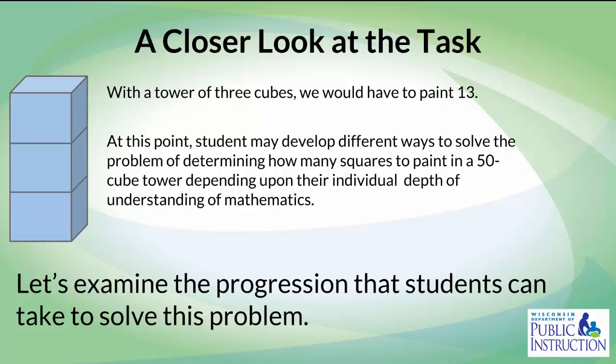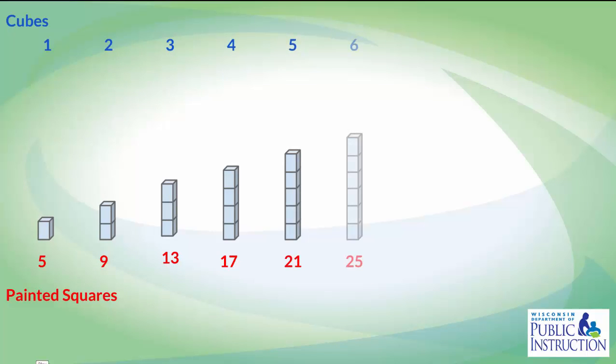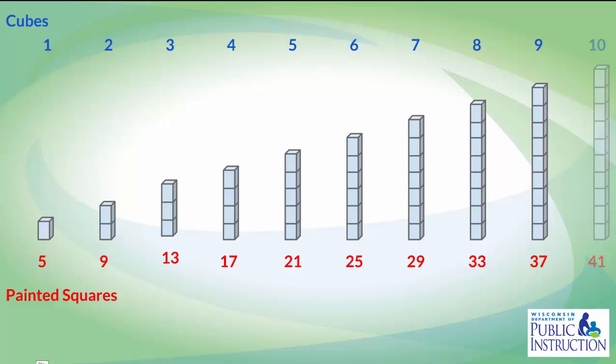Let's look further at this progression to see how students could solve this problem. One way you may have students do is they may actually try to build a tower of 50 cubes high and just simply start counting the number of squares that they would need. This may be a cumbersome task for students, especially given the fact that physically it would be difficult to build a tower that is 50 cubes high.